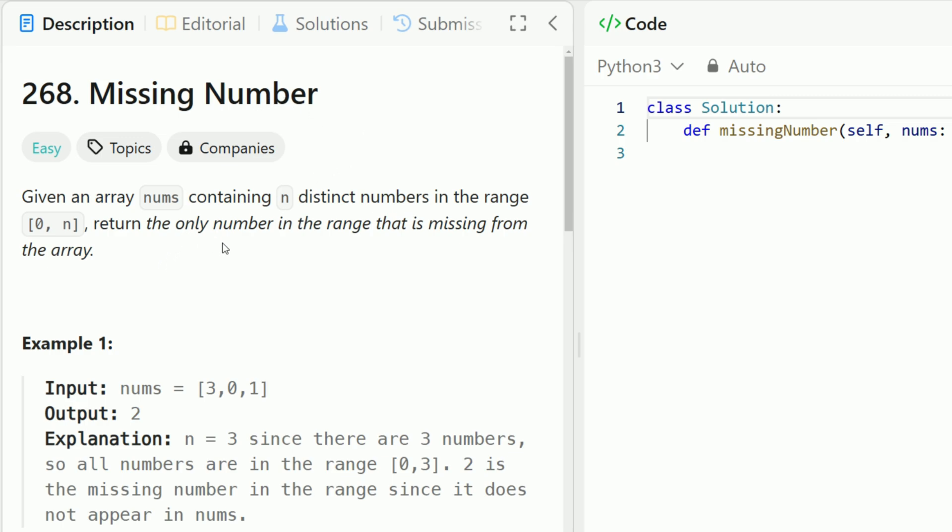Given an array nums containing n distinct numbers in the range from 0 to n, return the only number in the range that is missing from the array.